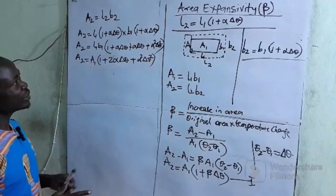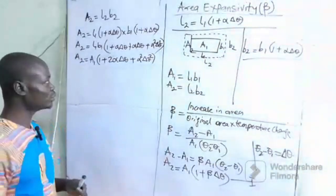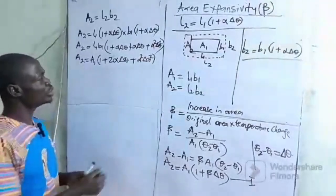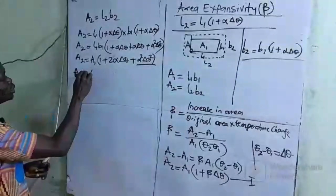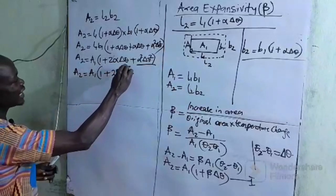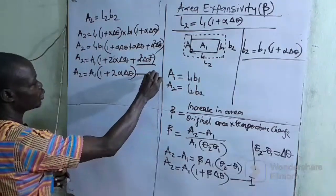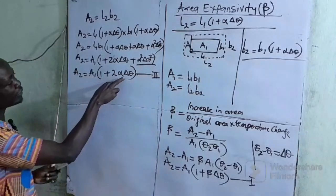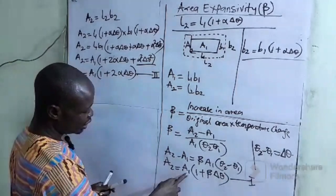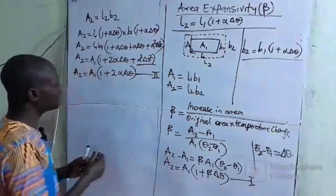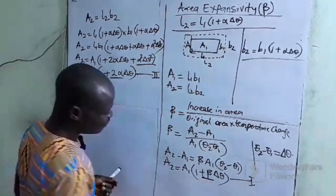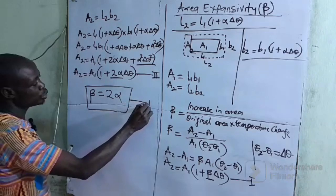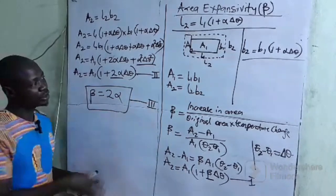From our understanding of linear expansivity, we know that alpha is always very small. So when you square the linear expansivity, the number we get is going to be very small, tending to zero — so that term is irrelevant. This leaves us with A2 = A1(1 + 2α·Δθ). Comparing this with A2 = A1(1 + β·Δθ), the only difference is 2α versus β. Therefore, the area expansivity β is equal to 2 times the linear expansivity α.